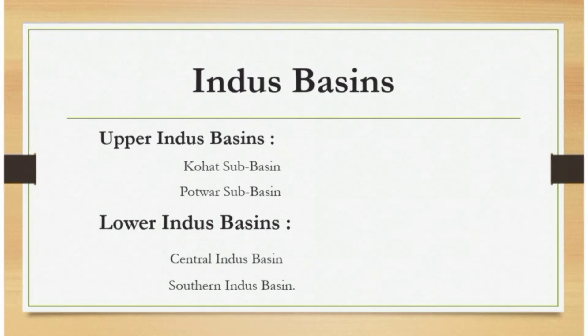Indus Basin is divided into two parts: Upper Indus Basin and Lower Indus Basin. Upper Indus Basin consists of Kohat Sub-basin and Potwar Sub-basin. Lower Indus Basin consists of Central Indus Basin and Southern Indus Basin.